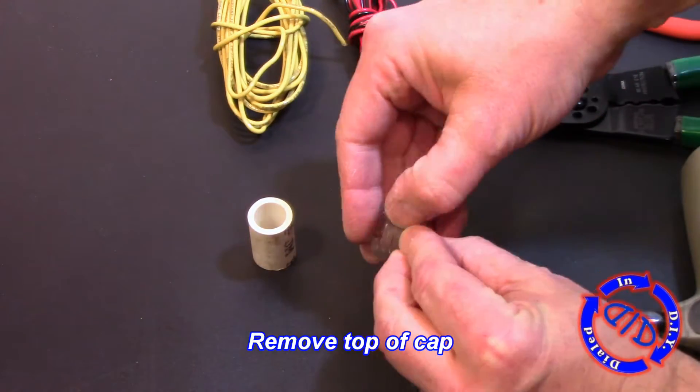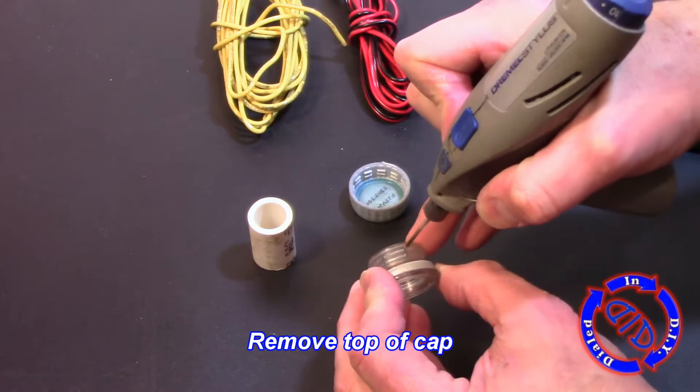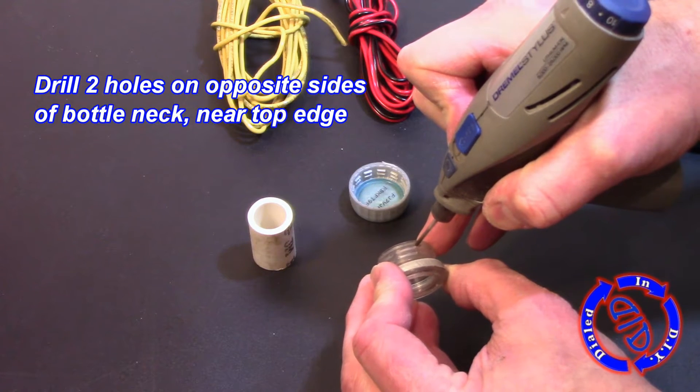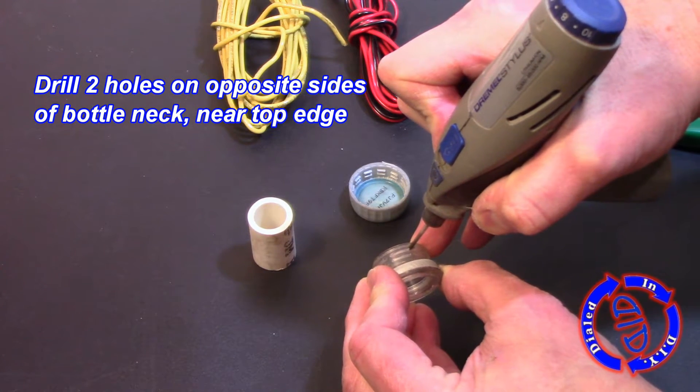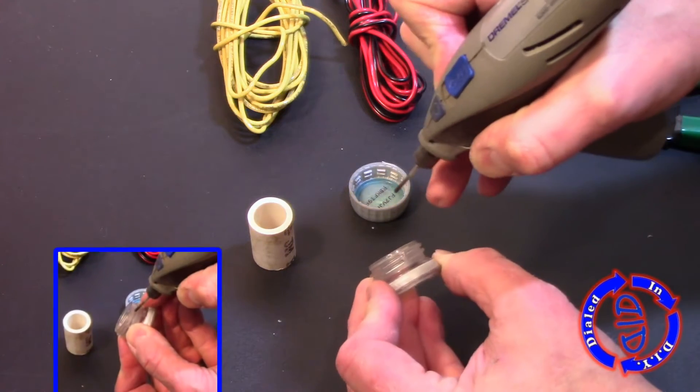For the next step you want to go ahead and remove the cap off of this and then find the spot just around the last threaded ridge to make a couple of holes. You're gonna make them on the opposite sides of this plastic part of the top.